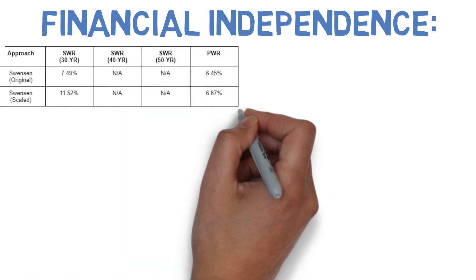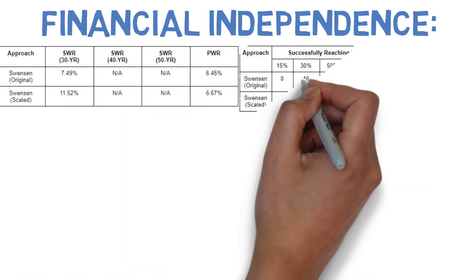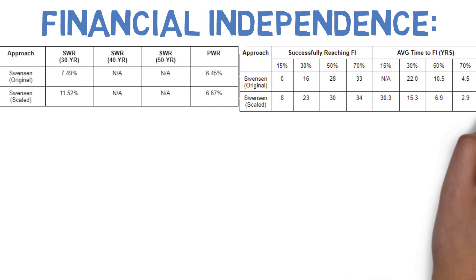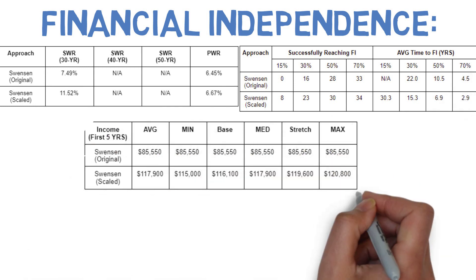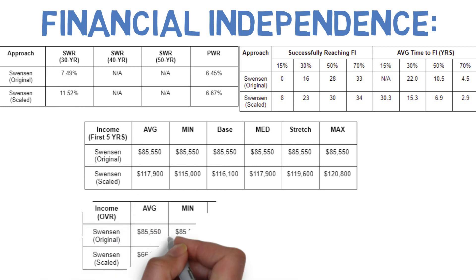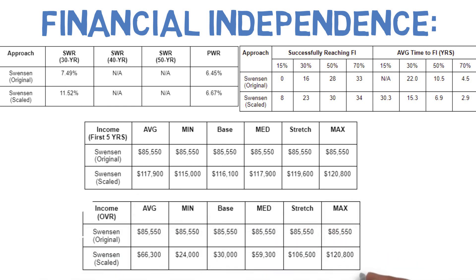As you can see, there's quite a jump across the board for safe withdrawal rates, which also translates into superior accumulation metrics. The income figures improve early on, but due to the fact that our guardrails would have us slash our incomes more often than before, the overall figures are a step down.